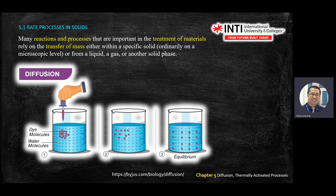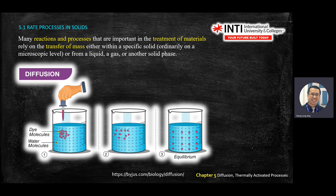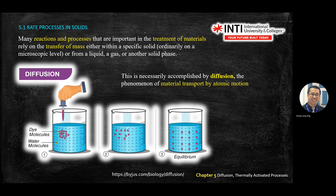On the screen is an illustration of how diffusion in liquid can form. However, in Chapter 5, we talk about solid. If you drop a dye into a solution of water, the dye molecule will spread and take some time until equally mixed. We call that the equivalent state. We will use this principle in explaining solid diffusion. Diffusion is a phenomenon where material transports by atomic motion.